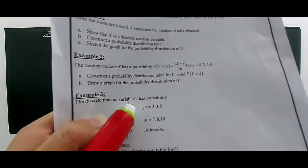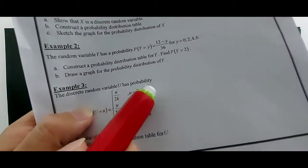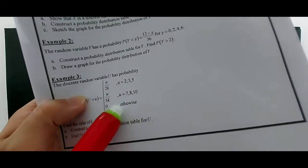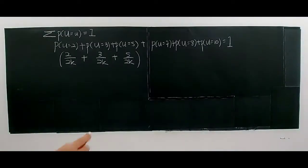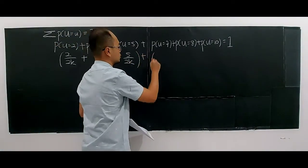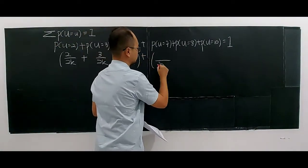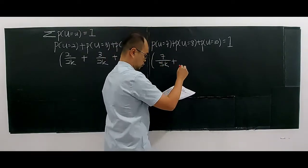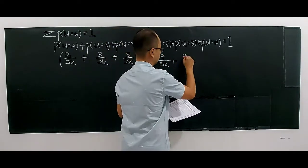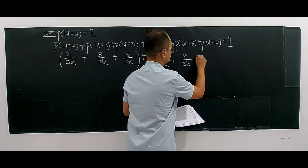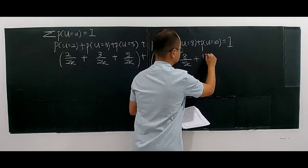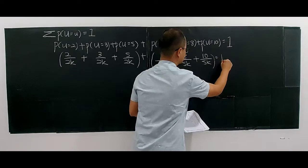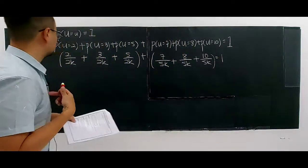So you have: 2 over 2k, plus 3 over 2k, plus 5 over 2k, plus 7 over 5k, plus 8 over 5k, plus 10 over 5k, all adding up to equal 1.